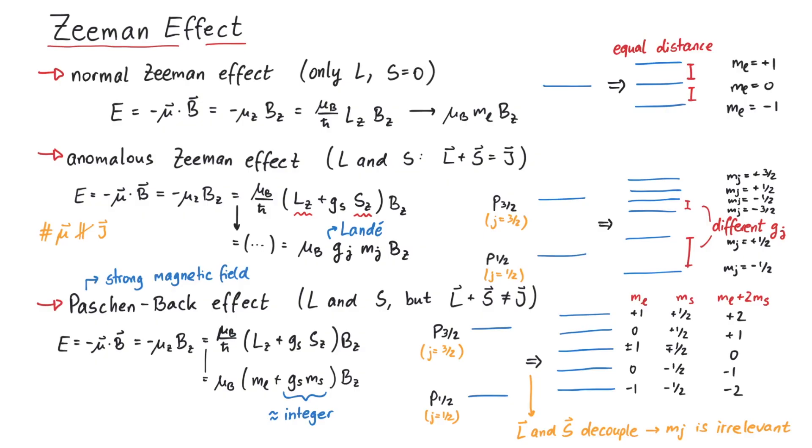Since those lines have equal distances from each other, it looks like as if by increasing the magnetic field strength we can go from the anomalous Zeeman effect to a normal Zeeman effect.